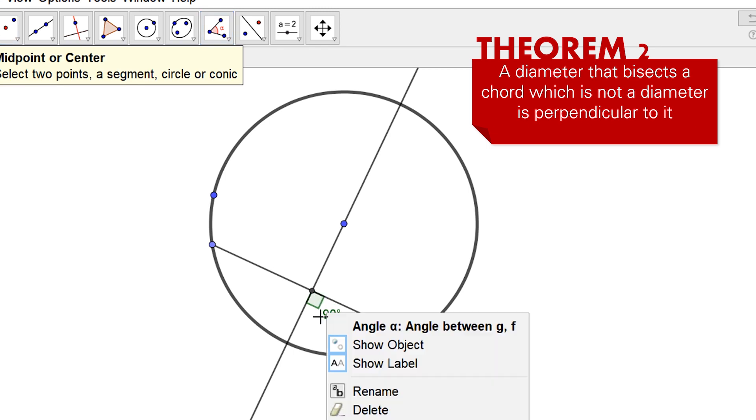So let's verify. Yeah, it's 90 degrees. Therefore, the diameter that bisects a chord is actually perpendicular to the chord.